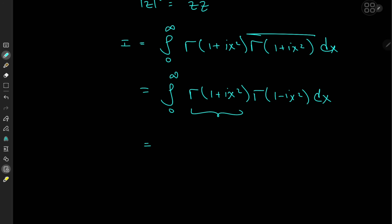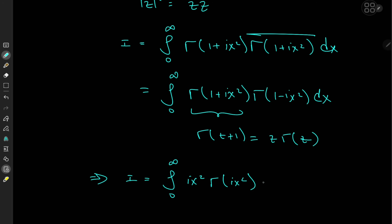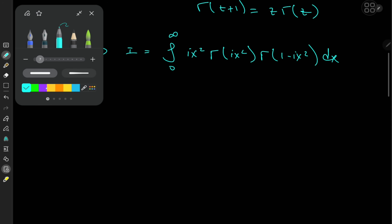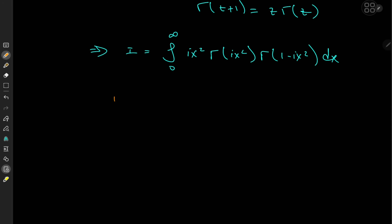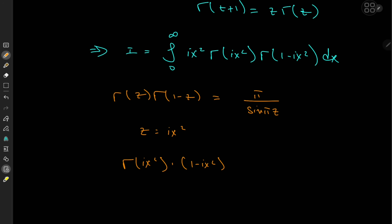The reason for that is we know the recurrence relation Γ(z + 1) = z · Γ(z), which implies that the target integral is now the integral from 0 to infinity of (ix²) · Γ(ix²) times Γ(1 − ix²) dx. Now we're in a position to invoke the beautiful reflection formula by Euler: Γ(z) · Γ(1 − z) = π / sin(πz). So with z = ix², we have Γ(ix²) · Γ(1 − ix²) = π / sin(iπx²).